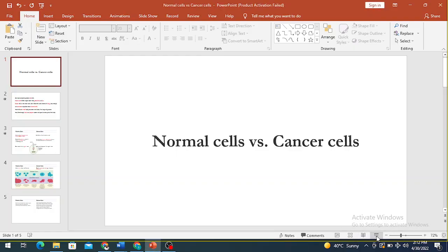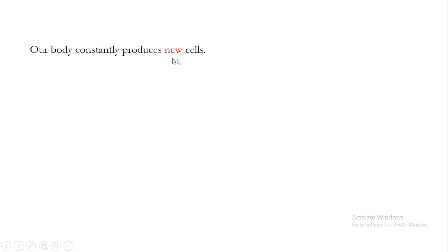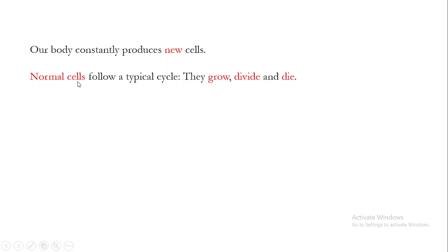Welcome back to this next video. In this video I am going to talk about normal cells versus cancer cells in the human body. Our body constantly produces new cells, and these new cells are of two types. The first type is normal cells — cells that are required for the normal physiological functions of our body. These normal cells follow a typical cycle: they grow, they divide, and they die. By following this cycle, the number of required cells in the body is maintained and normal physiological function is preserved.